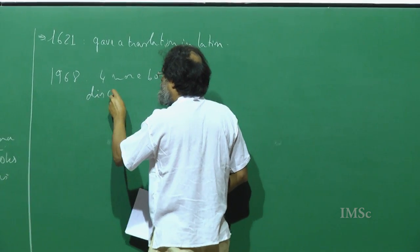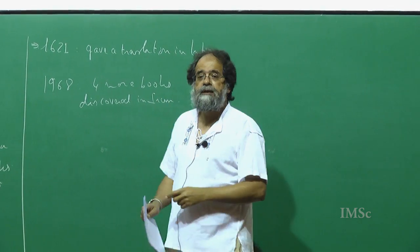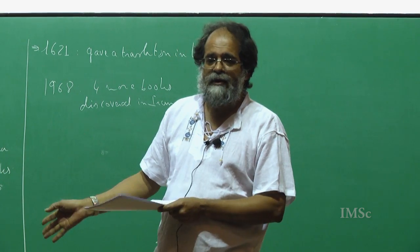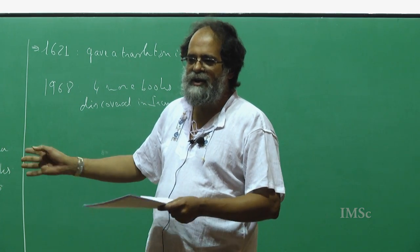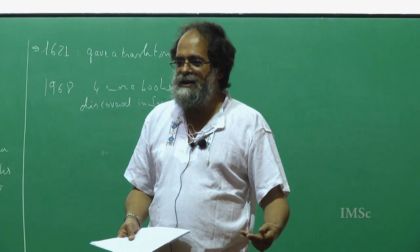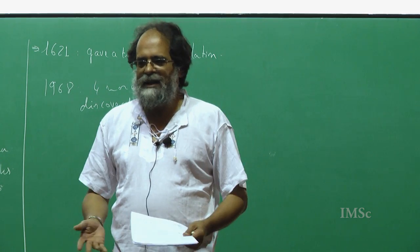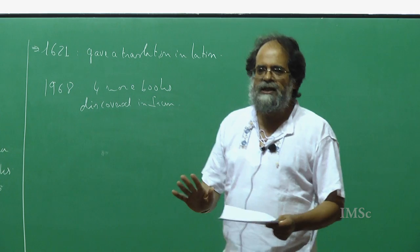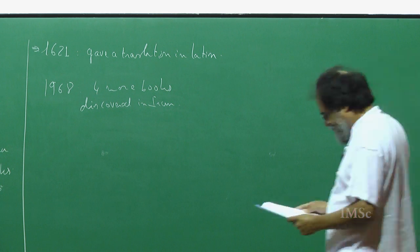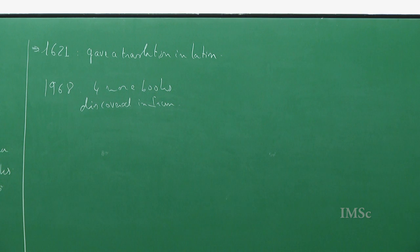More recently in 1968, four more books were discovered in Iran. These throw a new light on what Diophantus knew, but to my knowledge I am not sure that the historians have confirmed that these four more books actually come from the original manuscripts of Diophantus or contain too much add-ons by the Arab mathematicians who extensively worked on Diophantus.